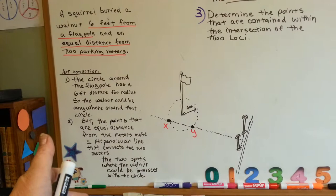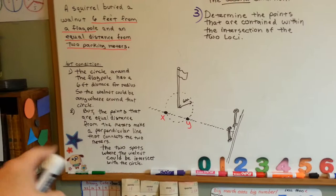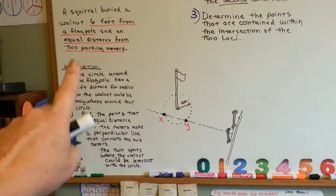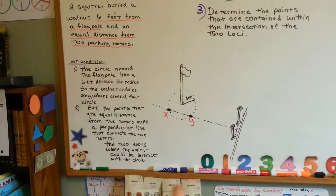You don't want to dig up 360 holes if you're a little squirrel trying to find your walnut again. So we make our circle to show that six feet, and then we do the second part. It's equal distance from the two parking meters.